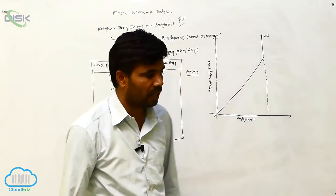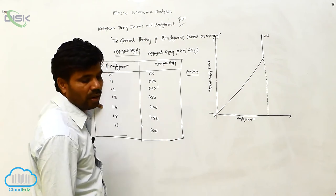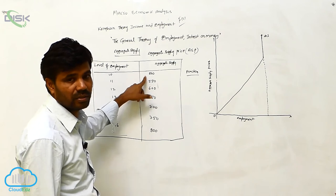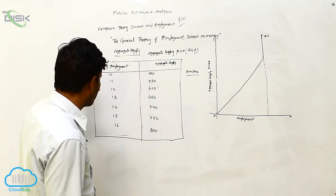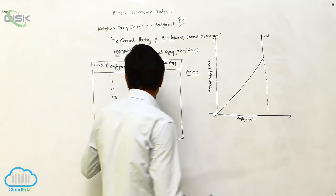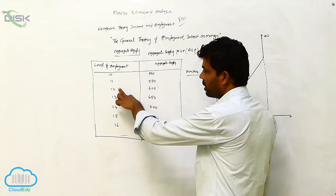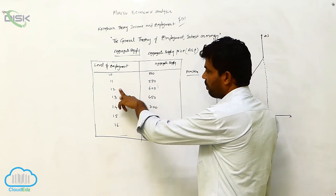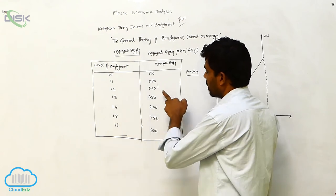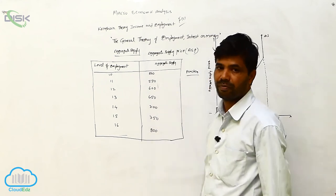The price is increasing. When you compare any stage — for example stage 13 compared with stage 12 — prices also increase, level of employment also increases, and the aggregate supply also increases from 600 to 650.